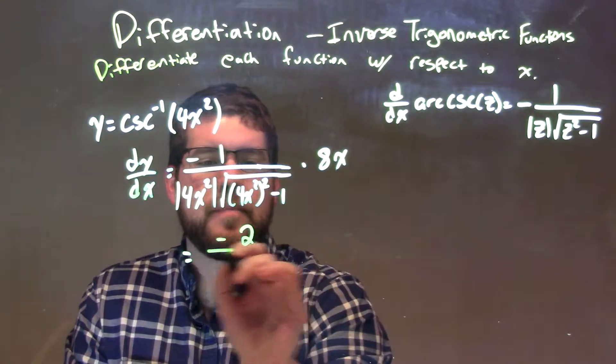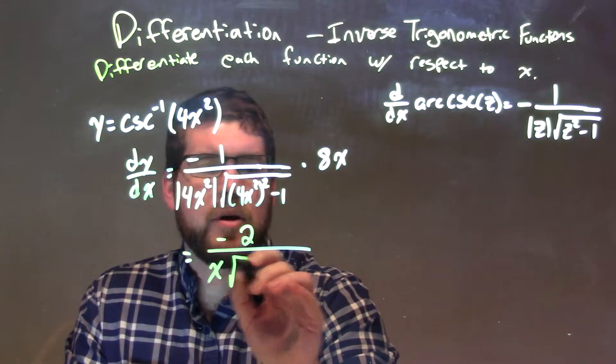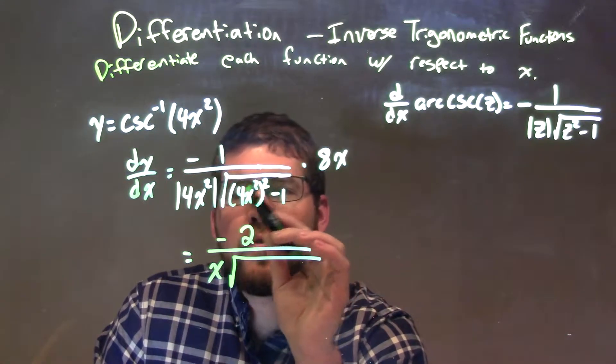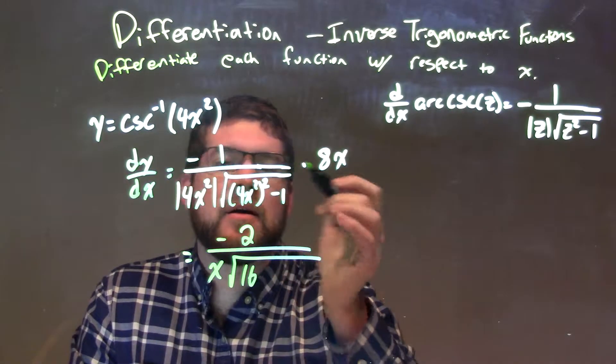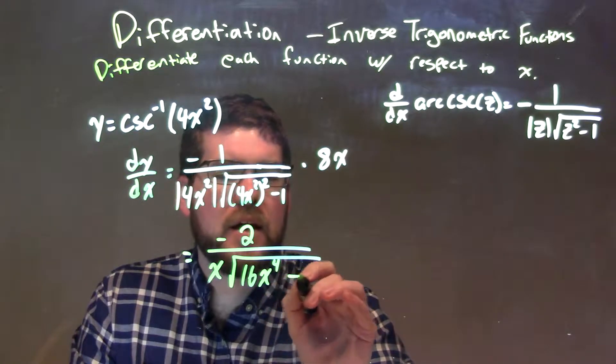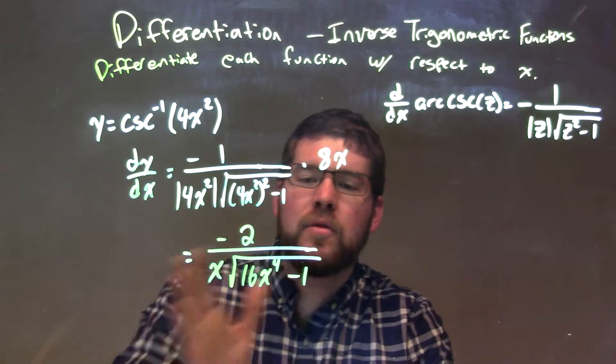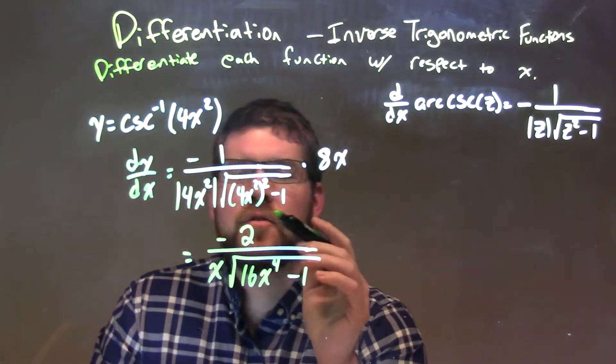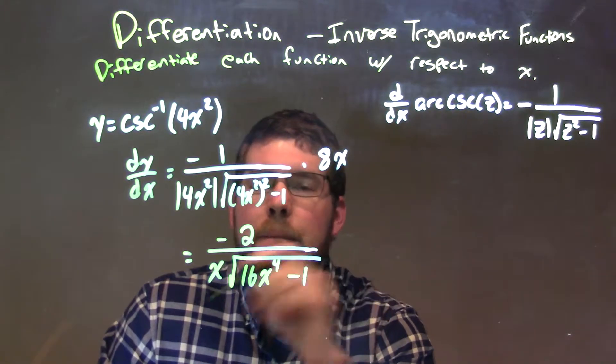Now, we're taking the square root, let's simplify this. 4x squared, all squared, we square the 4 to get 16, and then x squared squared is x to the 4th power, and we have the minus 1. So our final answer is negative 2 over x times the square root of 16x to the 4th minus 1.